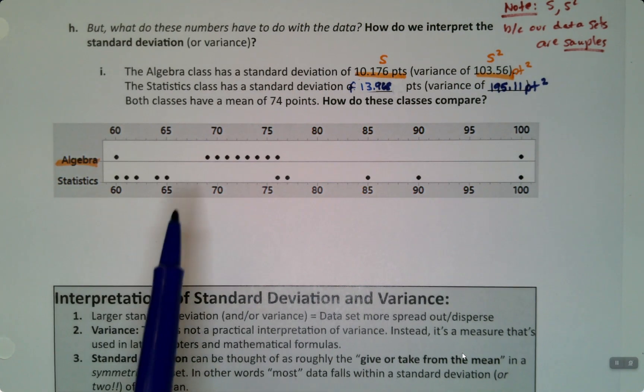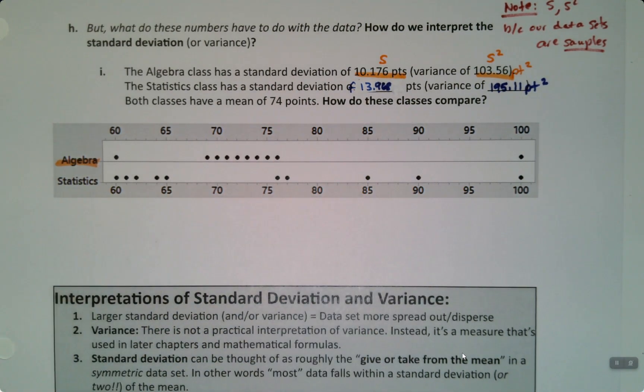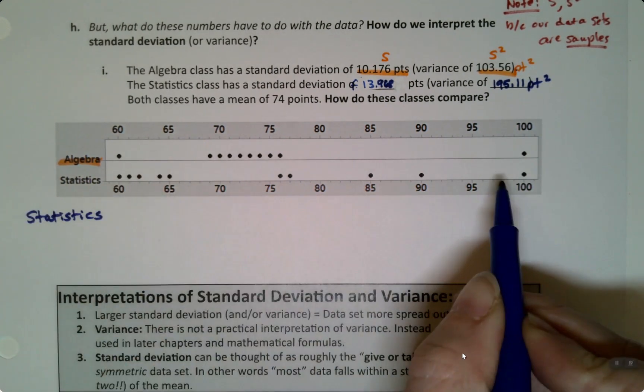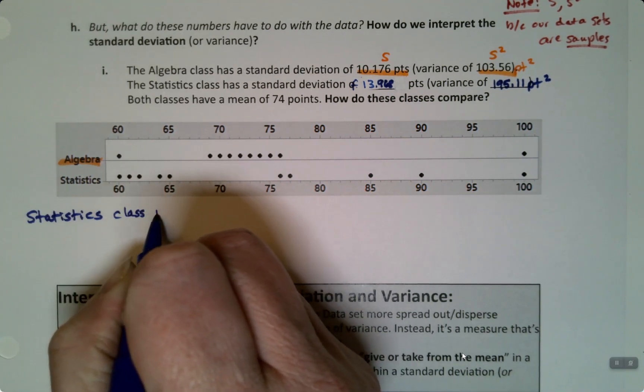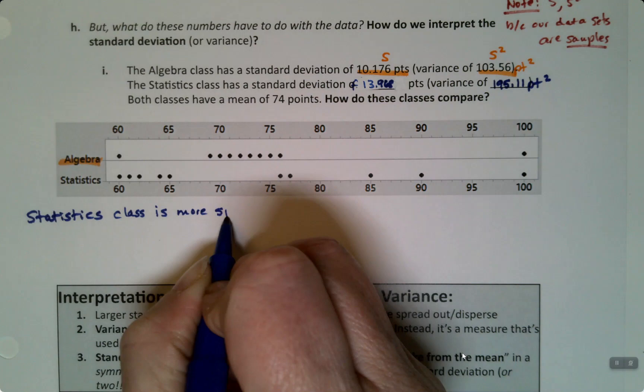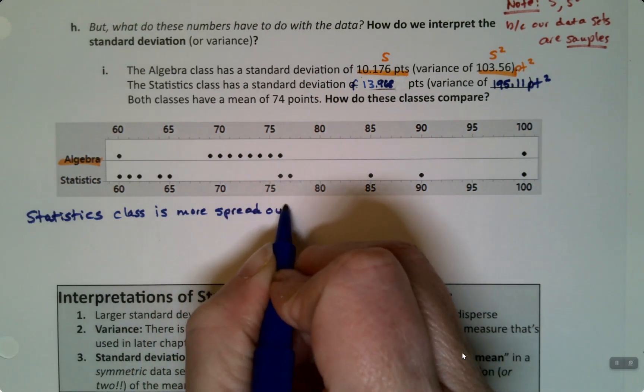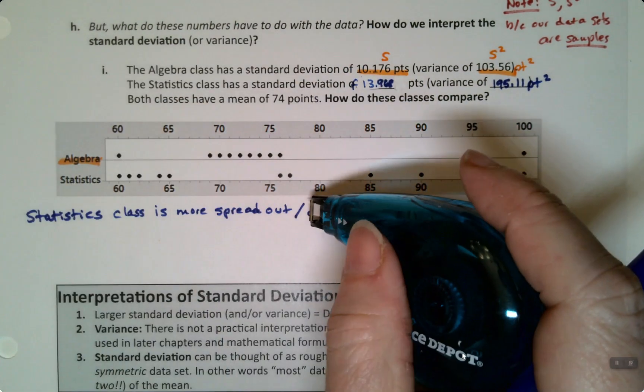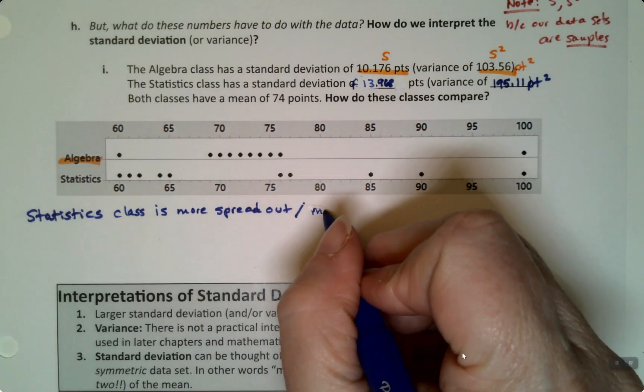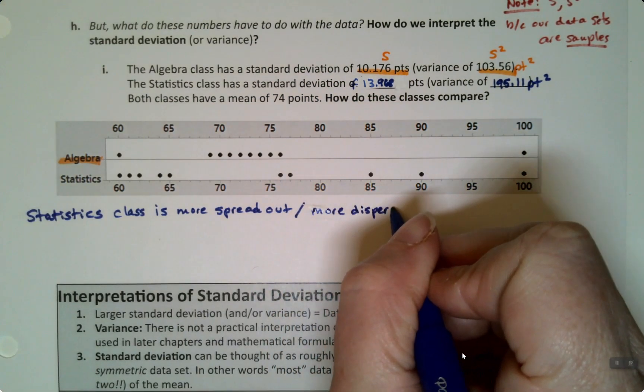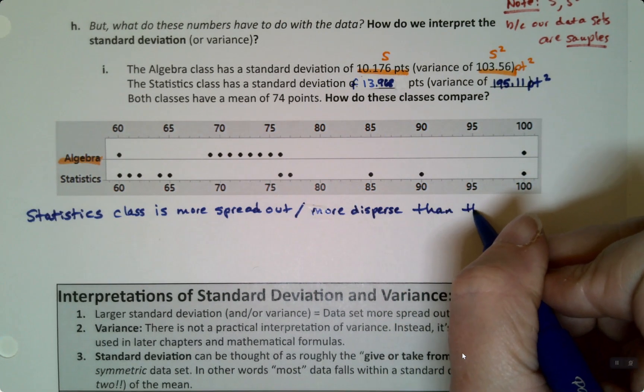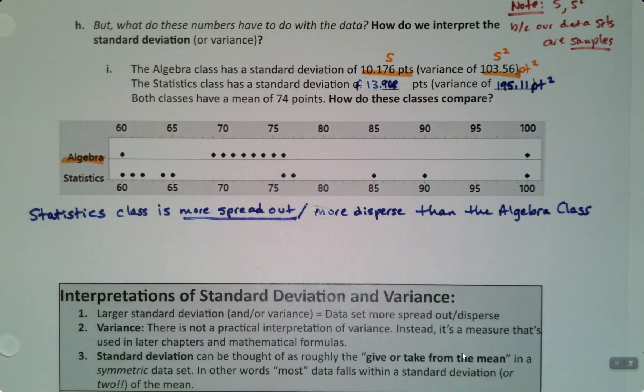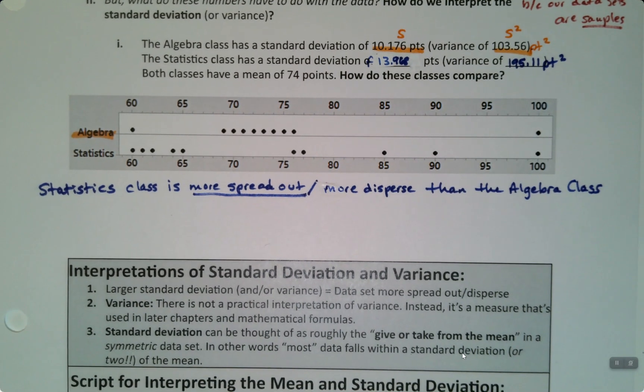Now, what is this telling us? Well, we can see it visually, but we can see it from these numbers. The statistics class is more spread out. The statistics class, which we knew from the graph anyway, I mean, you can look at the dots, is more spread out, right? It has more dispersion, is the fancy way to say it. I guess I'll say more disperse, more varied, right? More disperse than the algebra class.